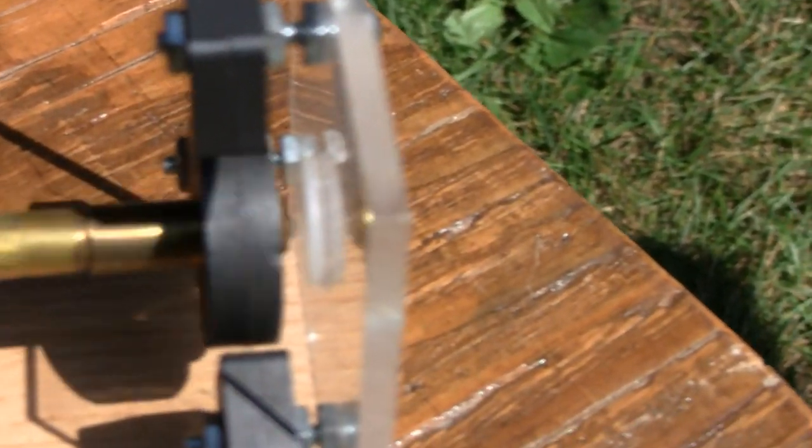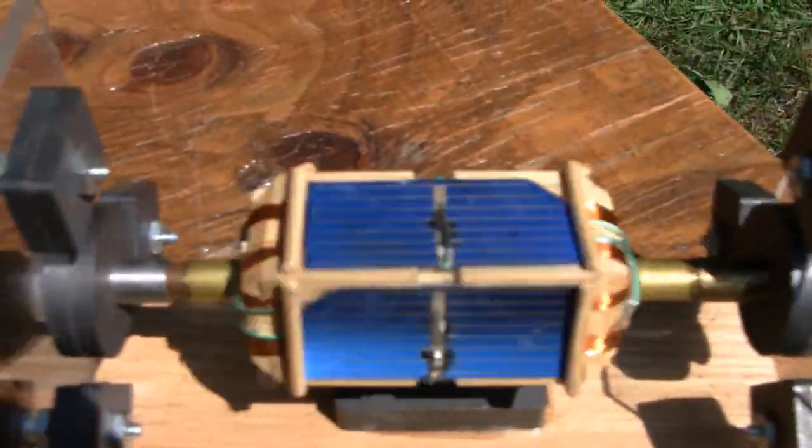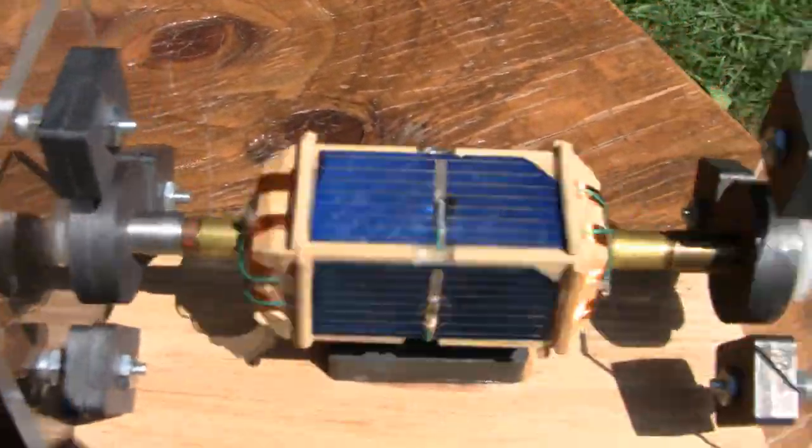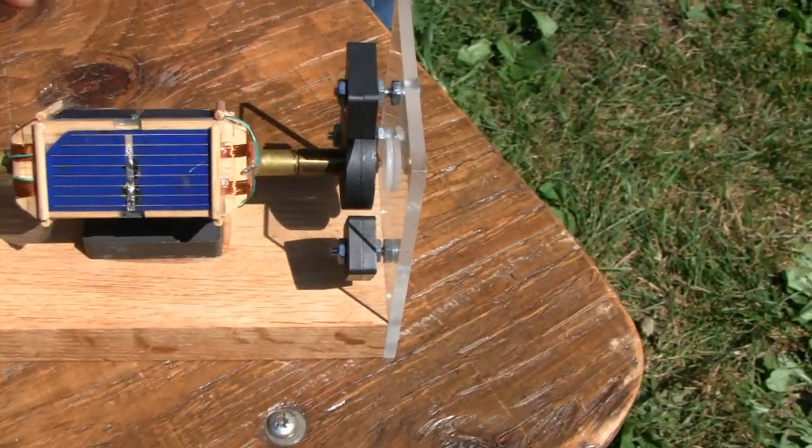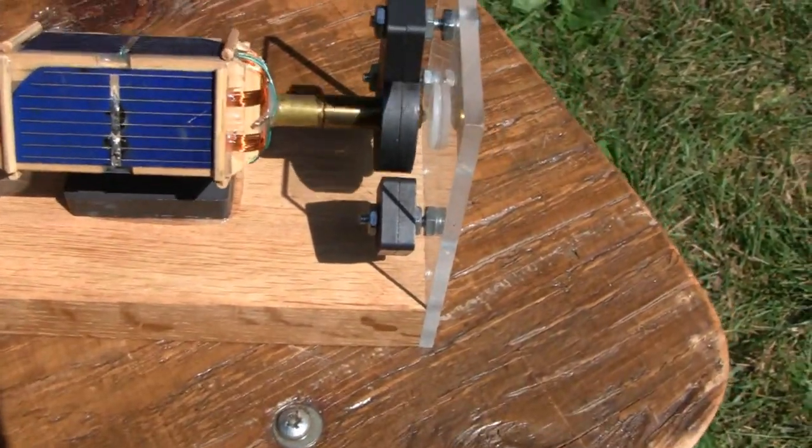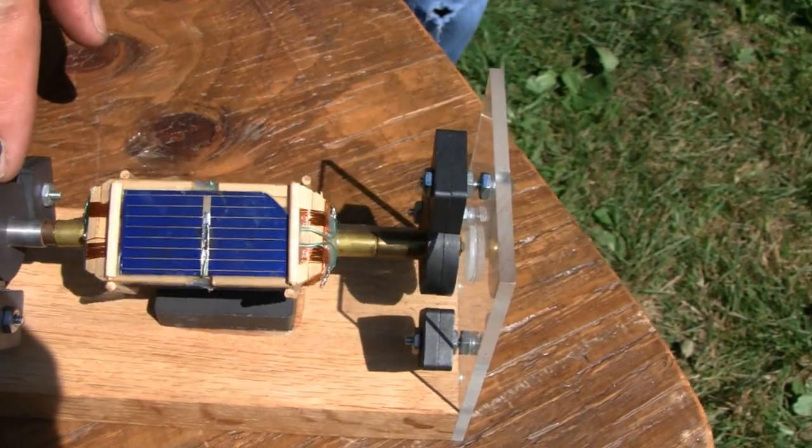Look, there's no bearings in there or nothing. Pretty clever. That's a solar cell. Can you stop at it? Get a good look at it. Look at that. Just solar cells on a hunk of wood with a winding on it.